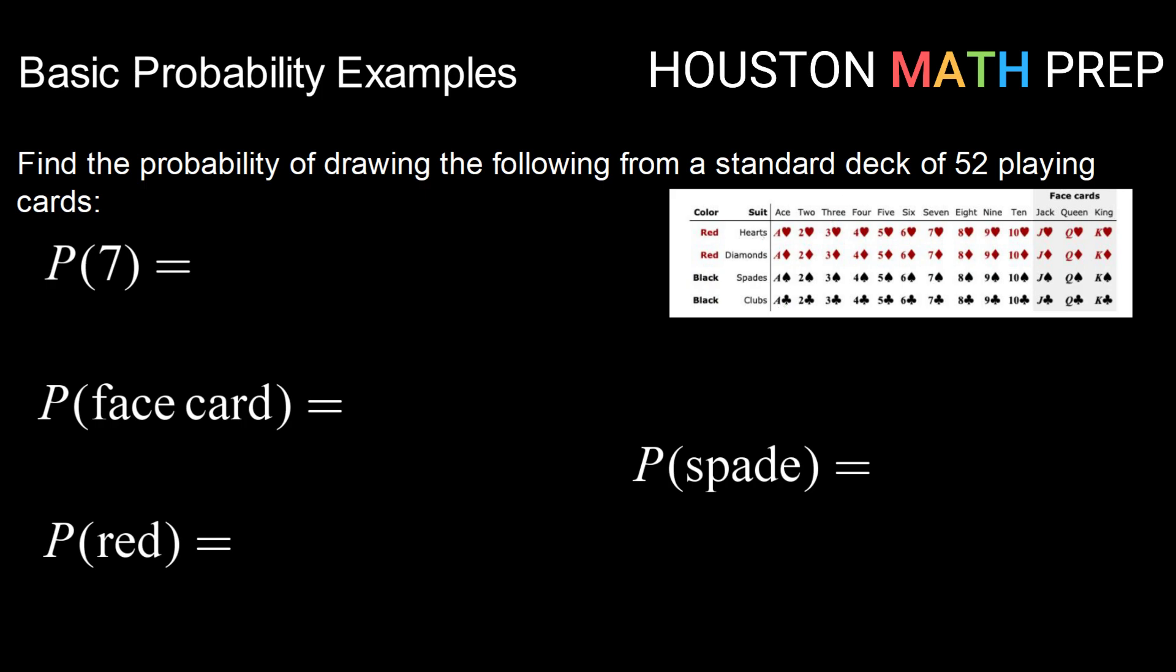There are 13 categories of cards: aces, twos, threes, and all the way up to jack, queen, king. We also have a category that includes jacks, queens, and kings called face cards.